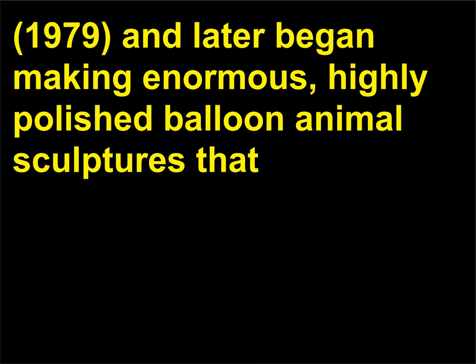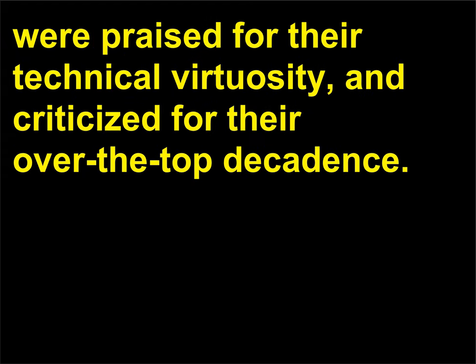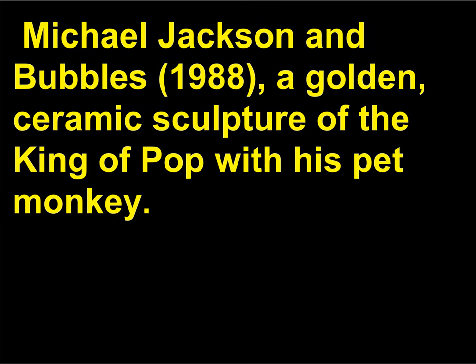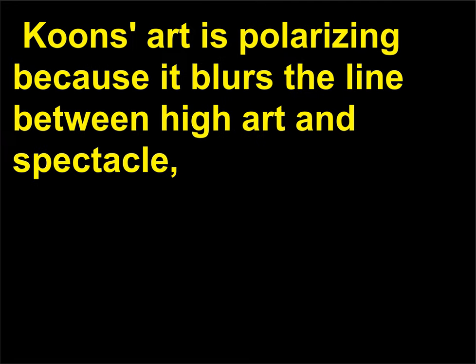Beginning in 1979, Koons later began making enormous, highly polished balloon animal sculptures that were praised for their technical virtuosity and criticized for their over-the-top decadence. Koons is also famous for his large topiary sculpture Puppy, 1992, and his Rococo-esque sculpture Michael Jackson and Bubbles, 1988 — a golden ceramic sculpture of the King of Pop with his pet monkey. Koons' art is polarizing because it blurs the line between high art and spectacle, which some say is exactly the point.